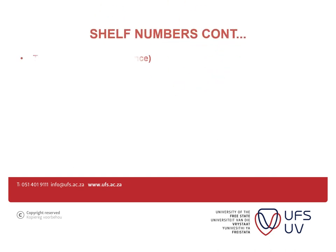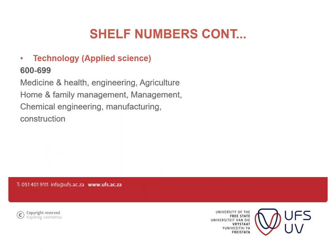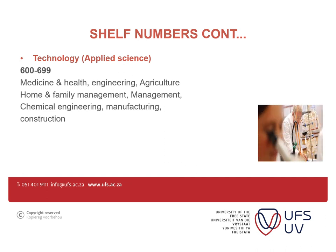Moving on to 600 to 699, which is technology or applied sciences. Under technology we have medicine and health, engineering, agriculture, home and family management, management, chemical engineering, manufacturing, and construction. I'm going to focus on those offered at the Cocoa Campus: accounting is 657, management is 658, and human resource management is 658.3.